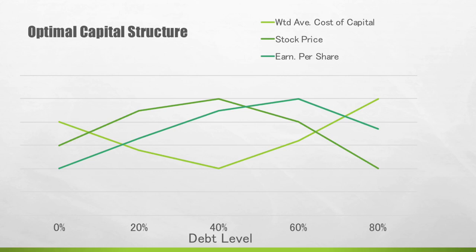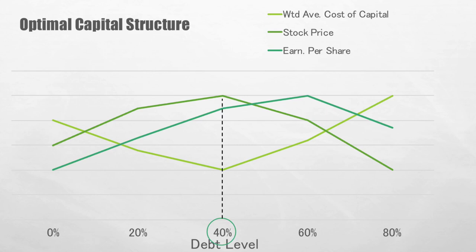We are going to look at variables and how they change as we move to a higher level of debt on the x-axis. As for our weighted average cost of capital, the apple green line, initially we would see a downward trend as debt level goes up from 0% to 20% to 40%. But after this point, we see an upward trend from 40% to 60% and from 60% to 80%. As for the stock price, we would see an upward trend initially from 0% to 20% to 40%. From this point, it goes down from 40% to 60% and 60% to 80%. At the debt level of 40%, we would see that this gives us both the highest stock price and the lowest weighted average cost of capital. So, this is our optimal capital structure.